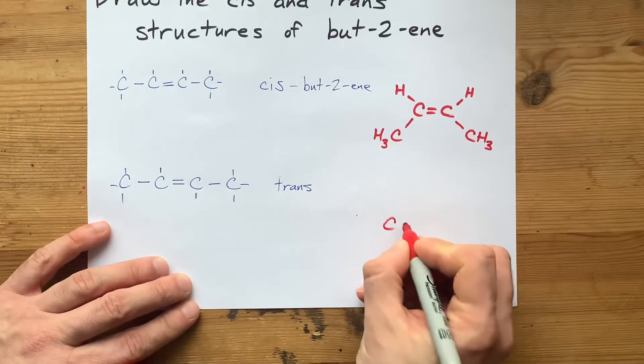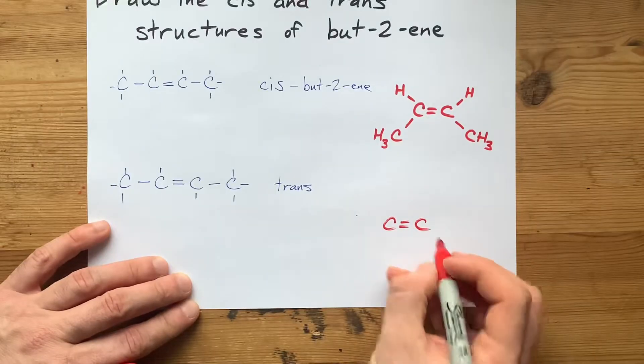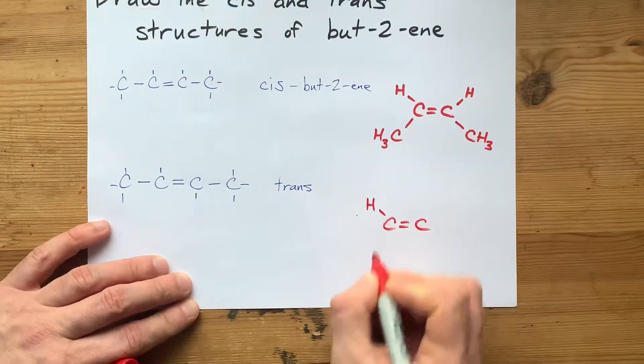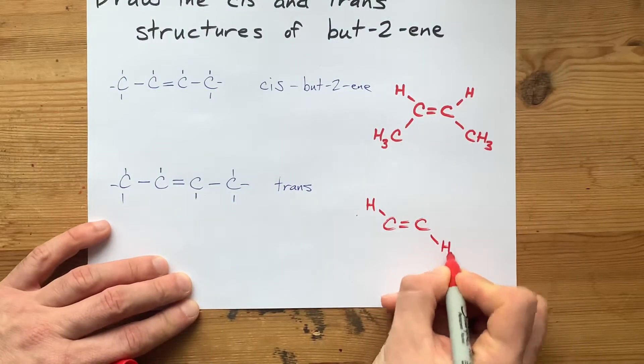Similarly, the trans isomer, if we start with the double bond here, one hydrogen needs to go upward, the other one needs to go downward.